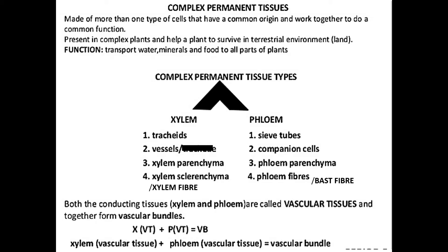Phloem consists of sieve tubes, companion cells, phloem parenchyma, and phloem fiber, which we call bast fiber. Xylem and phloem are made of different types of cells, which is why we call them complex permanent tissues. But together all functions as one — xylem transports water and minerals, and phloem transports food.